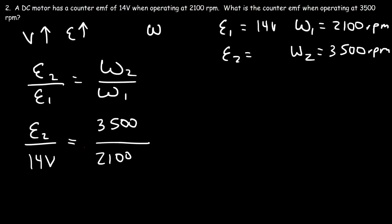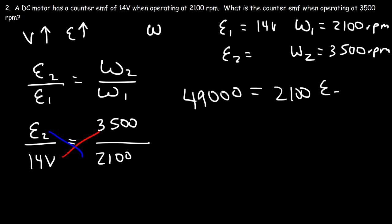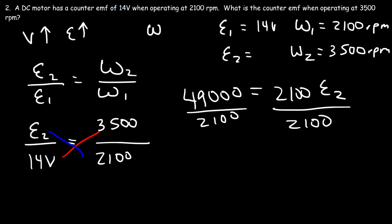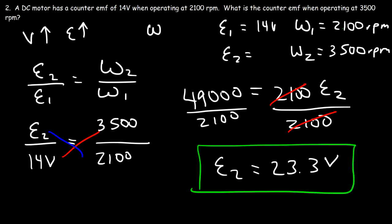Plugging in: EMF1 is 14, omega1 is 2100, and omega2 is 3500. Cross-multiplying gives 14 times 3500 equals 49,000, and that equals 2100 times the second counter EMF. Dividing both sides by 2100, we get 49,000 divided by 2100, which is 23.3 volts. That's the counter EMF at the higher speed of 3500 RPMs.